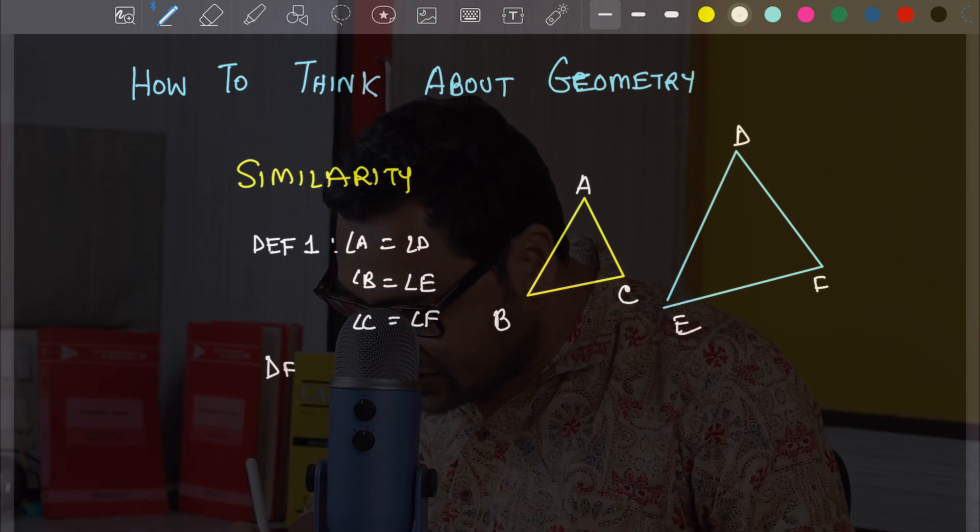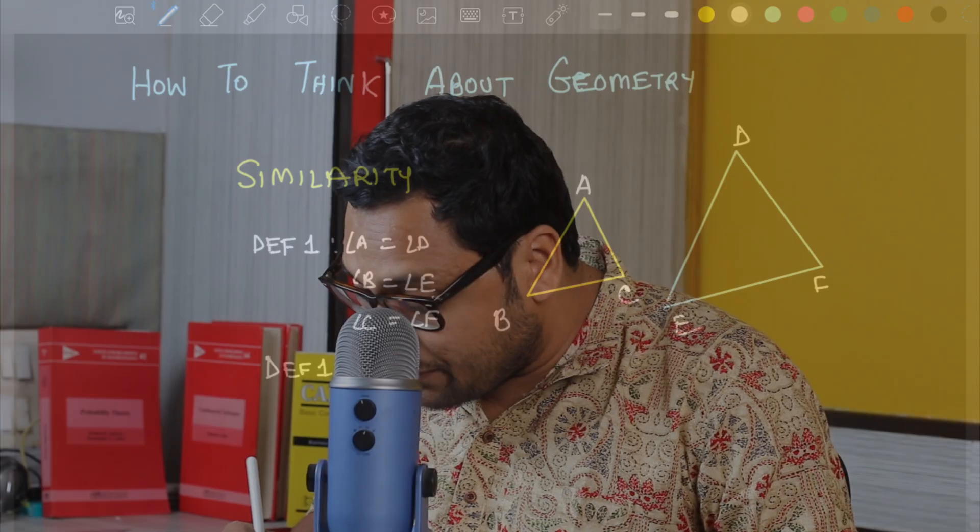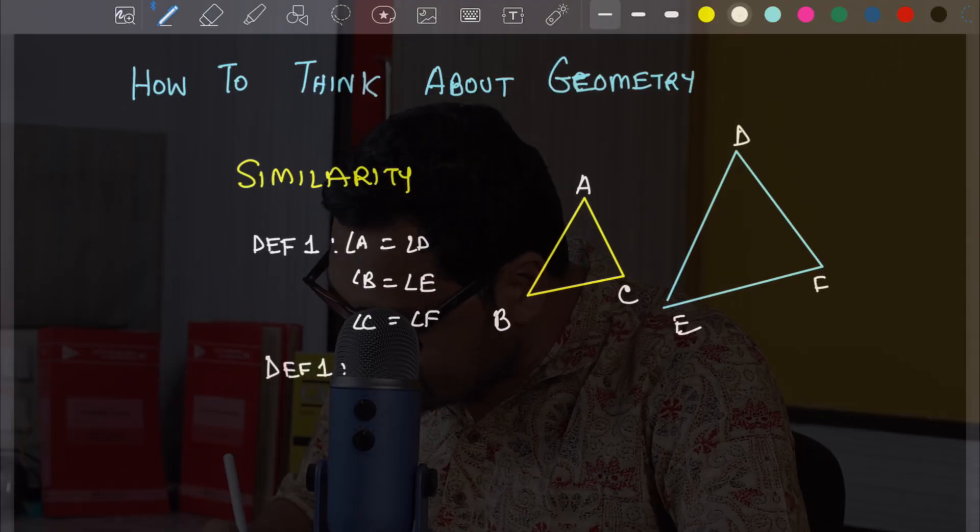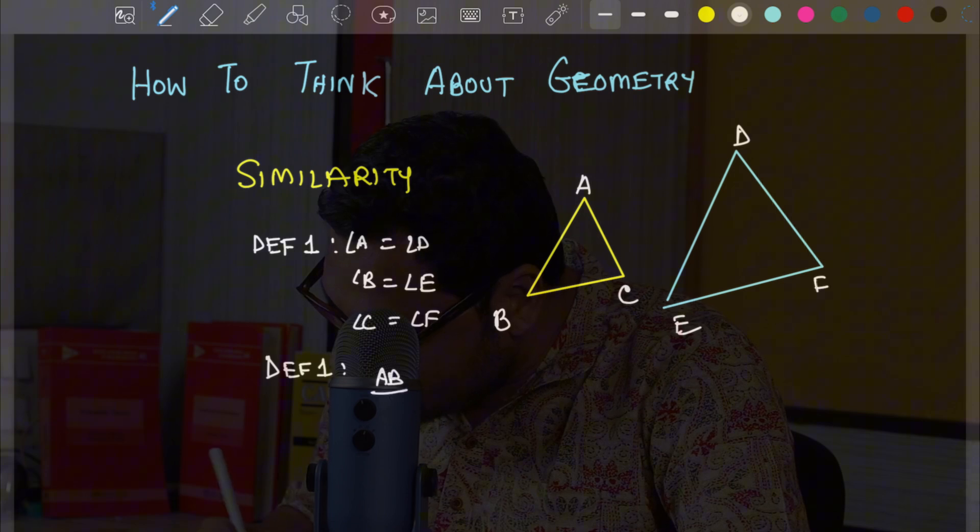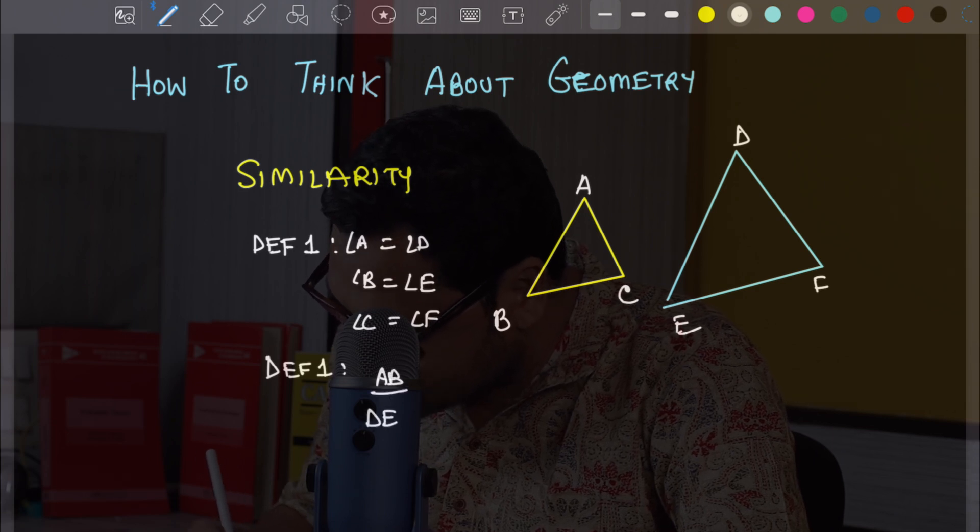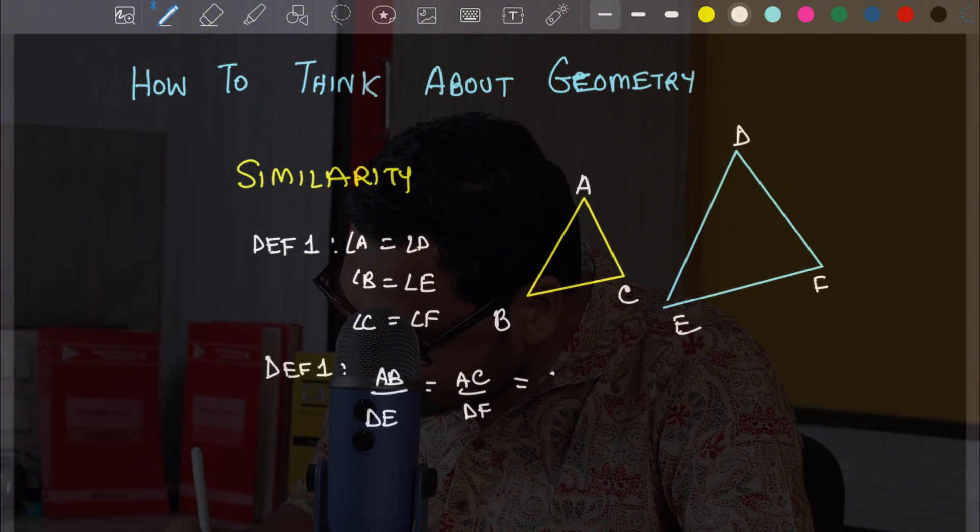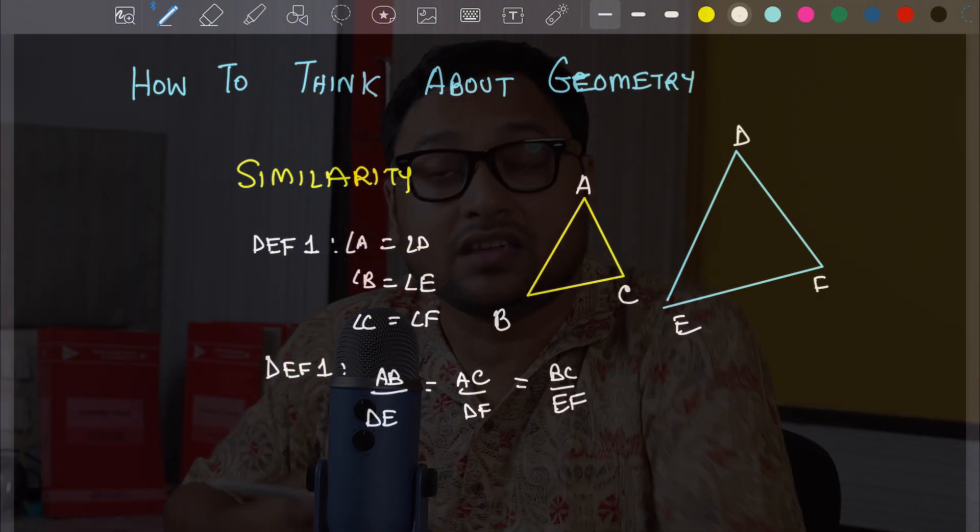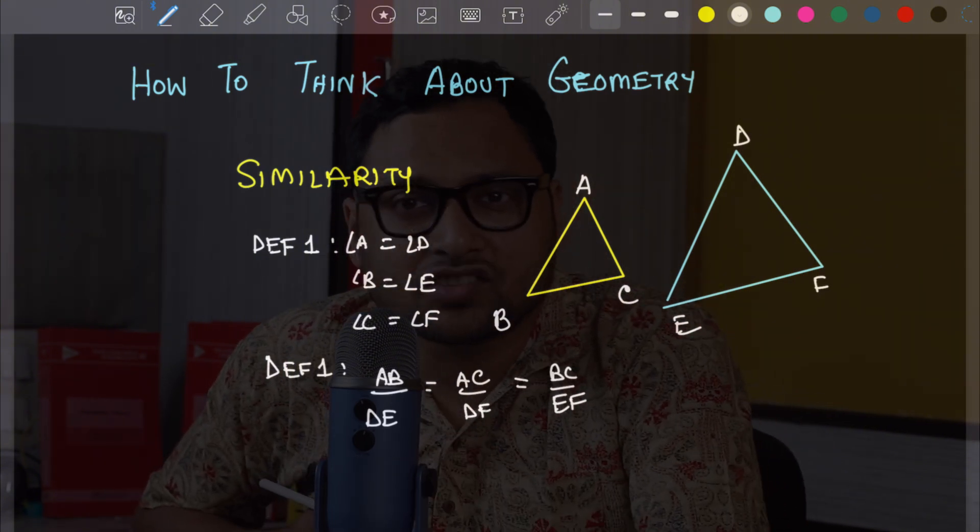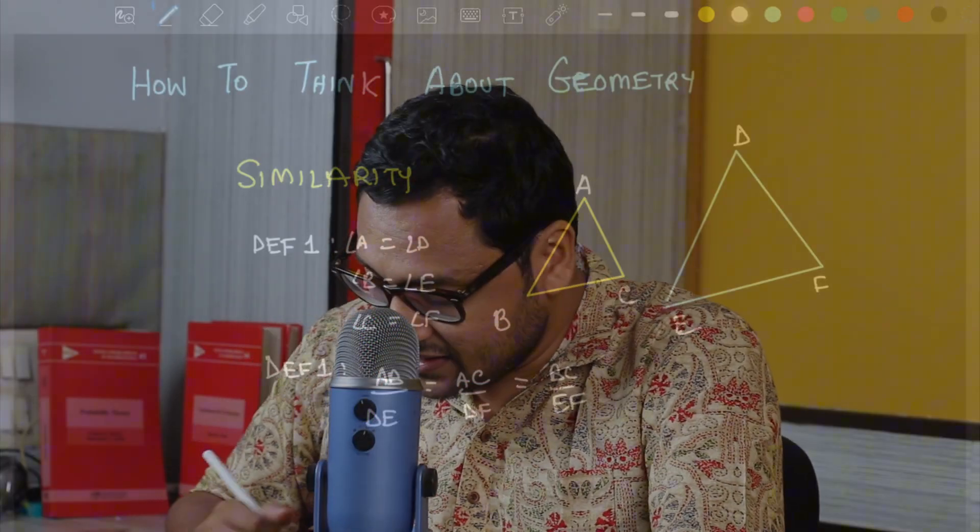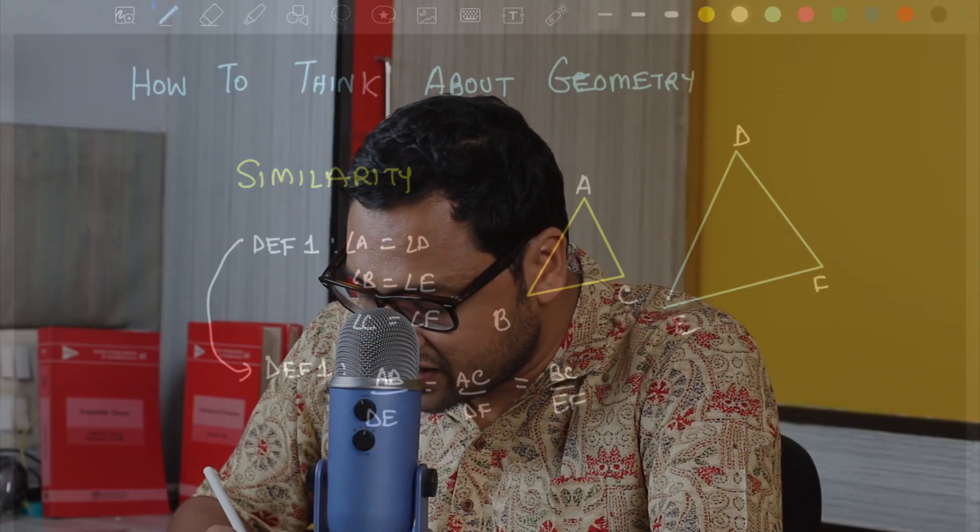There is another definition, definition 2, which is about proportionality of sides. So it says that corresponding sides, if you take their ratios, AC by DF, BC by EF, they will all be equal. So here is a challenge question. Can you rigorously prove that these two definitions are equivalent?